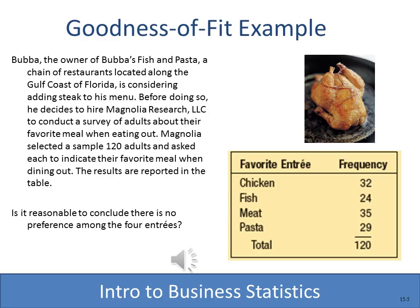Let's go through a complete example from the book — Bubba's Fish and Pasta. The owner thinks there is no preference among people who prefer chicken, fish, meat, or pasta, so he took a sample. The observed frequencies are: chicken 32, fish 24, meat 25, and pasta 29. We want to see whether or not there is a statistically significant preference between the four entrees.